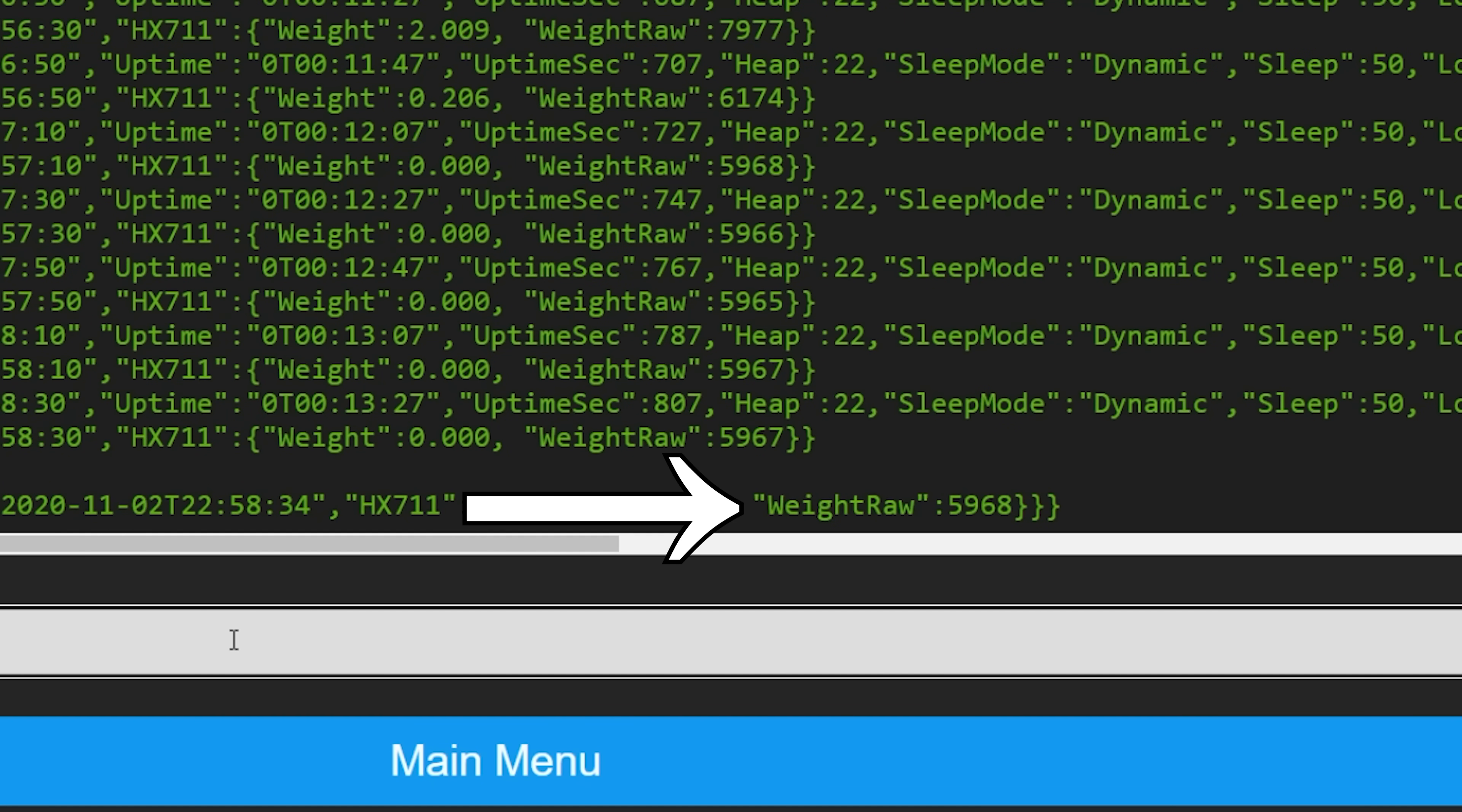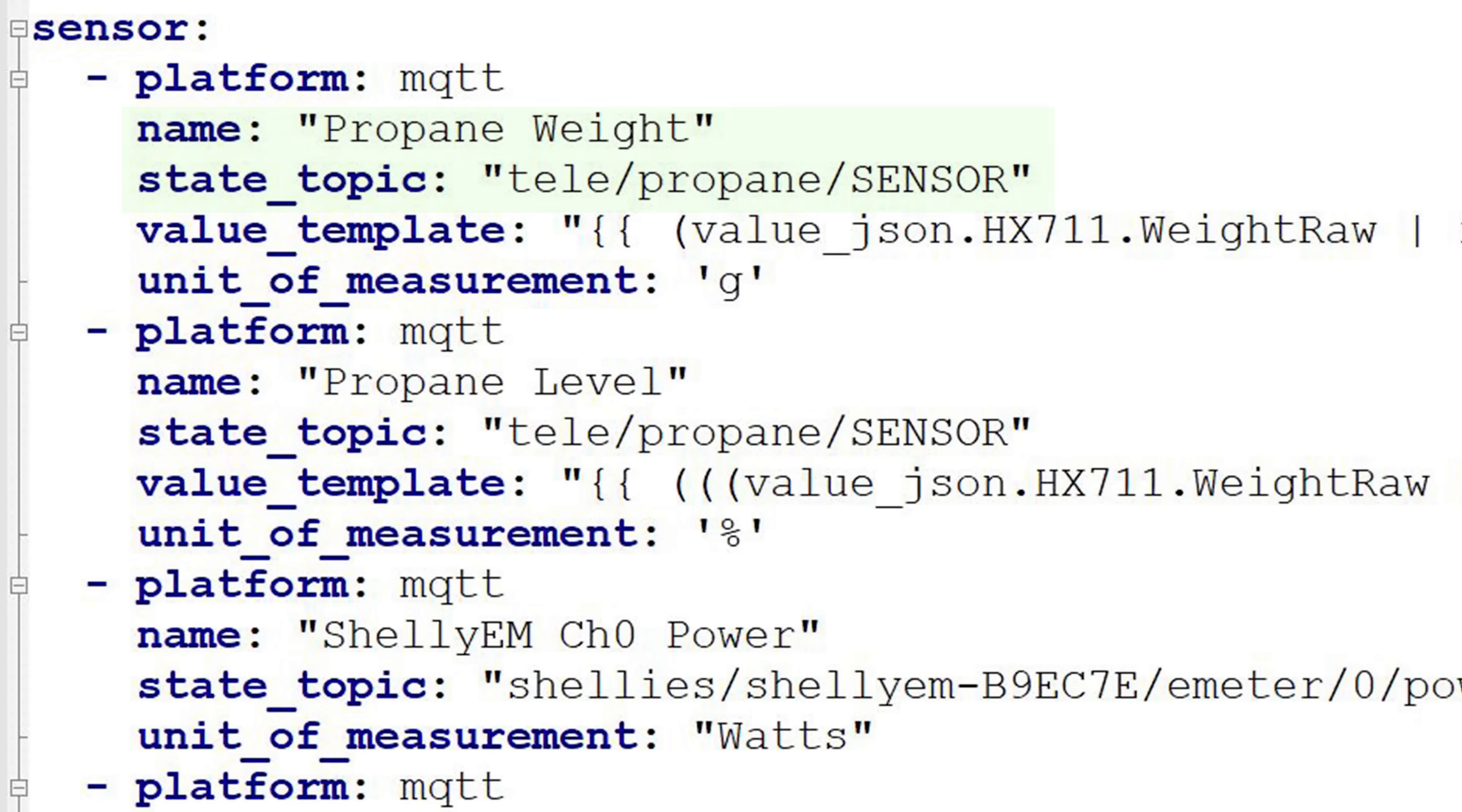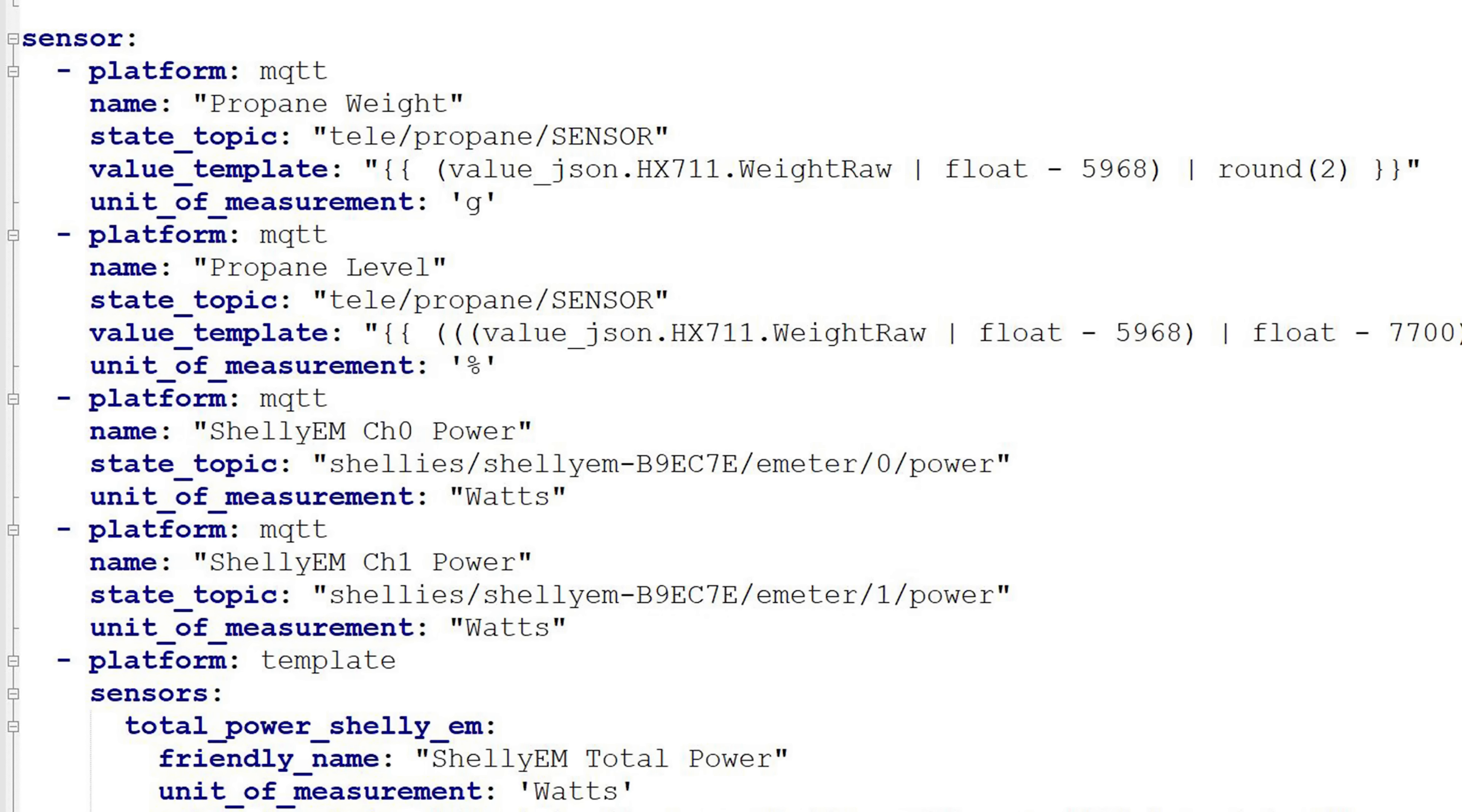To add an MQTT sensor to Home Assistant, open your configuration.yaml file and under the sensor heading, specify a name and a state topic according to the topic that you put into Tasmotizer earlier. For me it's tele-propane-sensor. Since the topic reports a JSON output, we need to grab the specific attribute for the raw weight. So we'll put in a value template to grab the JSON attribute from our HX711 sensor and then we just need to subtract the raw value of the scale that we wrote down earlier to calculate the number of grams on the scale. You can also specify the unit of measurement in this case is grams and then you're all set.